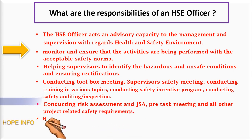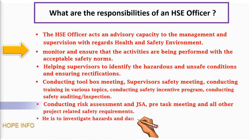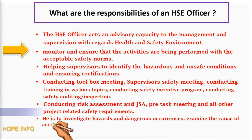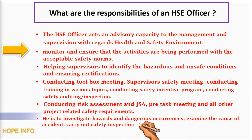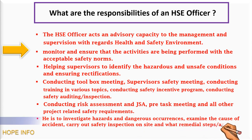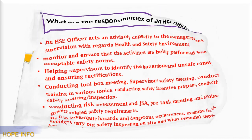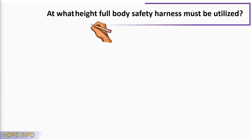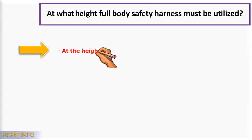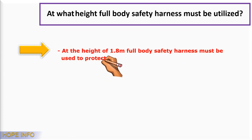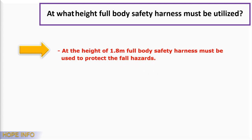The HSE officer is also responsible to investigate hazards and dangerous occurrences, examine the cause of accidents, and carry out safety inspections on site, including what remedial steps or actions have been undertaken. At what height must a full body harness be utilized? At a height of 1.8 meters, a full body harness must be used to protect against fall hazards.